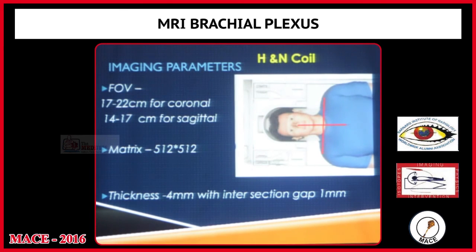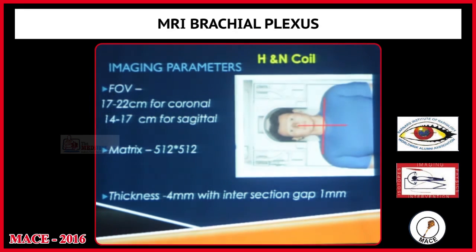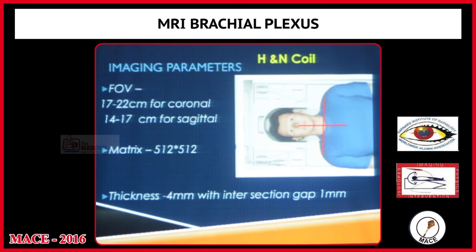Before going to the radiological anatomy, the imaging parameters should be noted. The patient should be in supine, head-first position, with a field of view (FOV) large enough to include both right and left shoulders. The FOV may be larger for coronal sections and smaller for sagittal sections, with a matrix of 512 by 512. Slice thickness is usually 4 millimeters with an interslice gap of 1 millimeter.